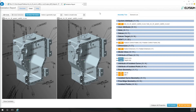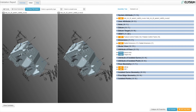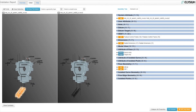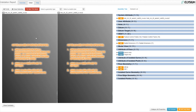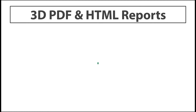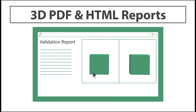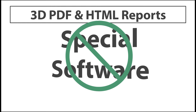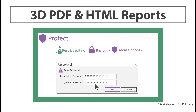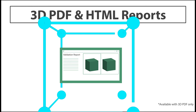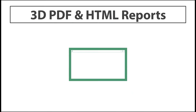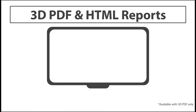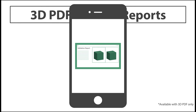Here is the HTML version. As you can see, it's very similar to the 3D PDF in functionality. Benefits to Elysium validation are: validation reports are easy to use and require no special training. No special software needed. 3D PDF allows rights management that secures and protects your files. Reports are fully customizable to your needs. 3D PDF allows easy sharing among multiple devices.